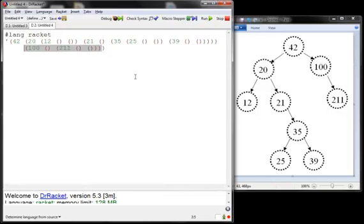This second piece, starting with 100, is the right subtree. Here I have the subtree starting with 20. The first thing in its list is the key 20. And the subtree starting with 100, the first thing in its list is the number 100.